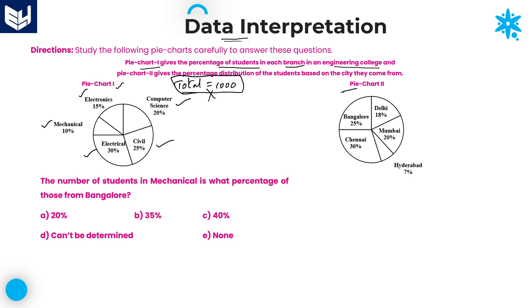Coming to the second pie chart, read this second line carefully. Pie chart 2 gives the percentage distribution of students based on the city they come from. The second pie chart shows from which city they are coming from. We have only Delhi, Mumbai, Hyderabad, Chennai and Bangalore. The students joining this particular engineering college all come from these five cities.